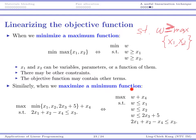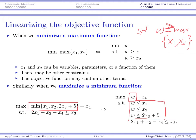Similarly, when we are maximizing a minimum function, we can do a similar thing. For example, suppose I want to maximize the minimum of x1, x2, and 2x3 plus 5, plus another term x4, subject to a constraint. I can just look at this minimum function, replace it by one variable W, and W must be less than or equal to each of the three terms. So if I am maximizing a minimum function or minimizing a maximum function, I can solve that problem.